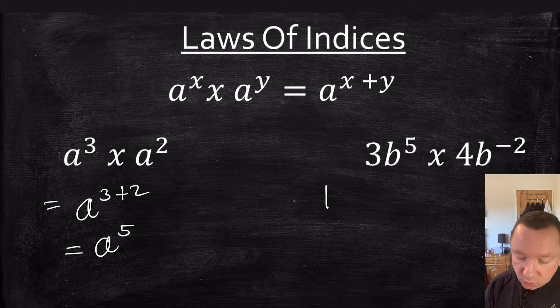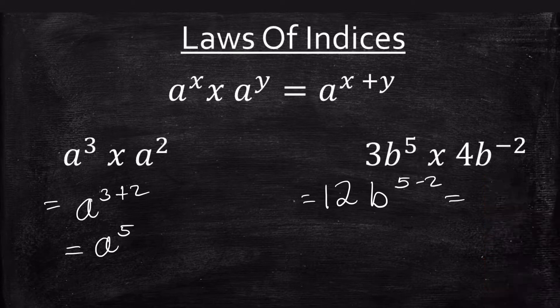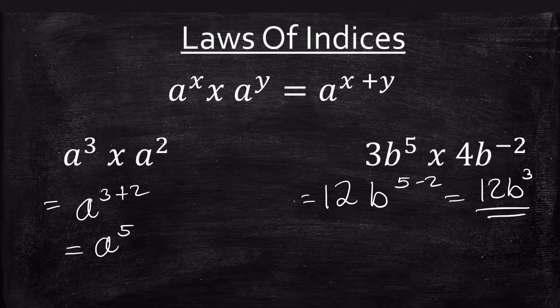So 3 times 4 makes 12, and we've got b to the power of 5 and minus 2. So that equals 12b to the power of 3, or 12b cubed.